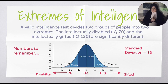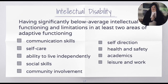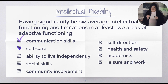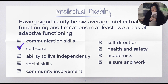An intellectual disability is having significantly below average intellectual functioning and limitations in at least two areas of adaptive functioning — meaning being able to adapt to, respond to, and thrive in one's world. Adaptive functioning includes things like communication skills and self-care, for example being able to shower, brush or comb your own hair, and brush your teeth.